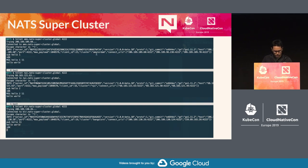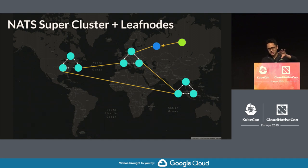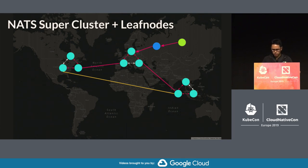This is an example of superclusters. Leaf nodes are essentially an extra node that connects to a supercluster, and you can communicate with the leaf node instead and the same thing would happen.